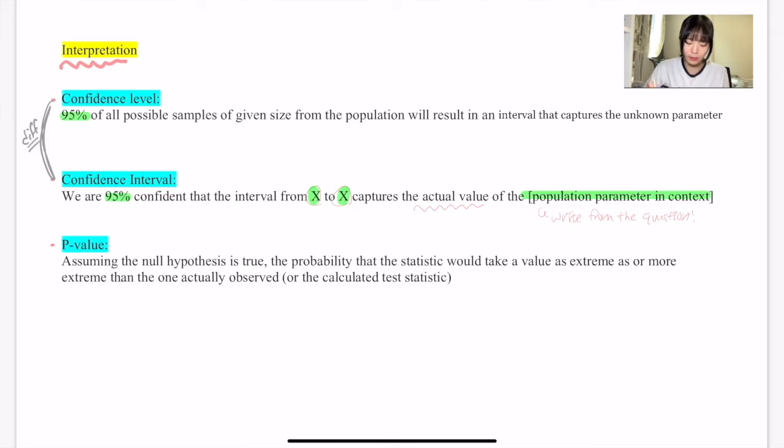For the p-value, you would say: Assuming that the null hypothesis is true, the probability that the statistic would take a value as extreme as or more extreme than the one actually observed, or the calculated test statistic. These interpretations are frequently asked in your AP FRQs, so it will be useful to memorize these and use them on your test day.